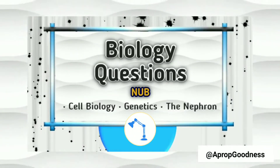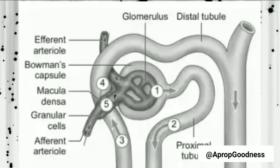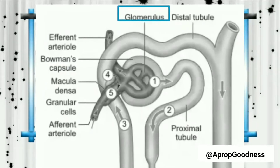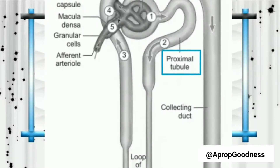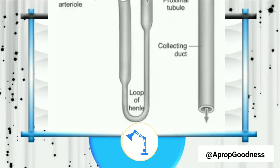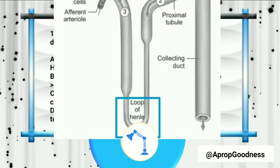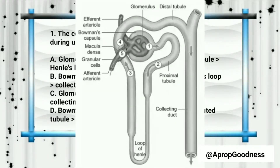The correct sequence of movement of urea during urine formation — we have a diagram of the nephron on screen. The sequence is from the glomerulus to the Bowman's capsule, then to the convoluted tubule, then going to the loop of Henle, and then to the collecting tubule.